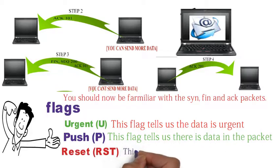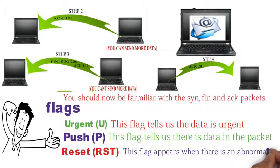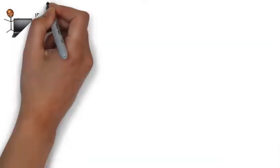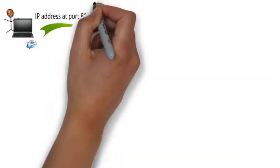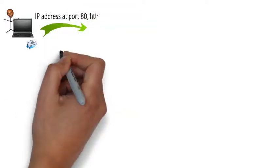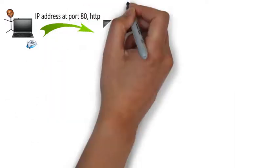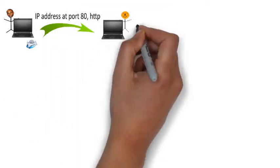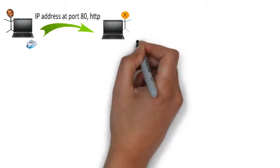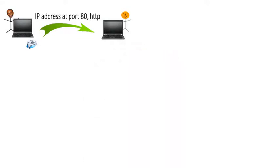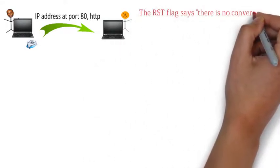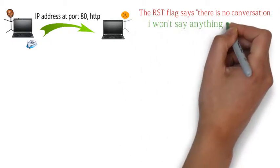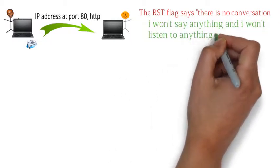The RST flag appears when there is an abnormal close of a connection. For example, let's say I sent a packet to an IP address at port 80, HTTP. If the recipient device is on but port 80 is closed, I will receive a packet with an RST flag. The RST flag says there is no conversation — I won't say anything, and I won't listen to anything you have to say.